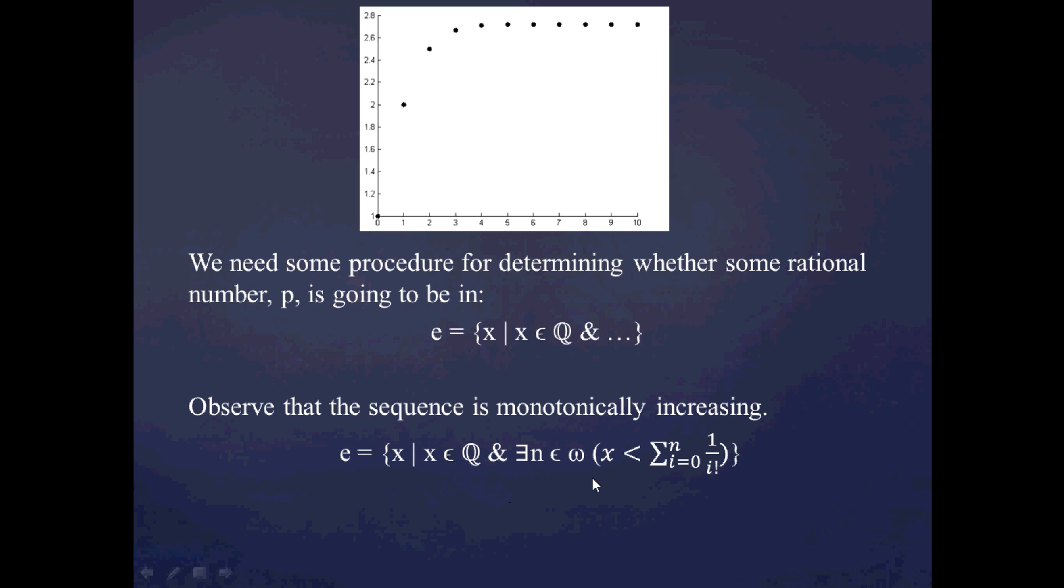So, for 2.6, graphically it looks like N should be 3. So, 3 iterations is the point at which the series exceeds, the partial sums exceeds 2.6. And I propose we use that as a criterion by which we judge whether a rational number is in the cut E. And what's left to verify is that sticking in this formula here, there exists an N that's a natural number such that X is less than the partial sum up to N, produces a set which is actually a Dedekind cut.